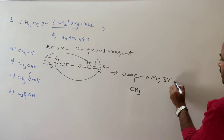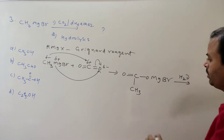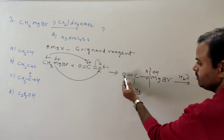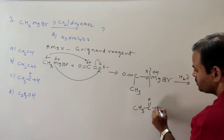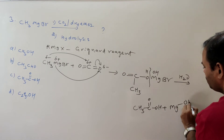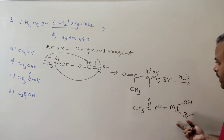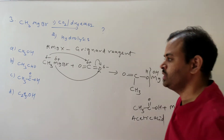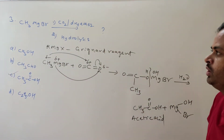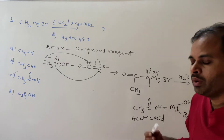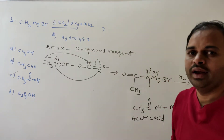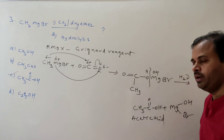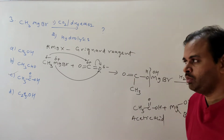This intermediate undergoes hydrolysis with H-OH, giving CH3COOH plus Mg(OH)Br. So the product is acetic acid — a carboxylic acid. The answer is option C: acetic acid. This demonstrates preparation of carboxylic acid from Grignard reagents.